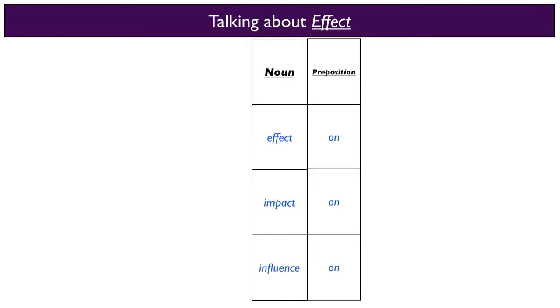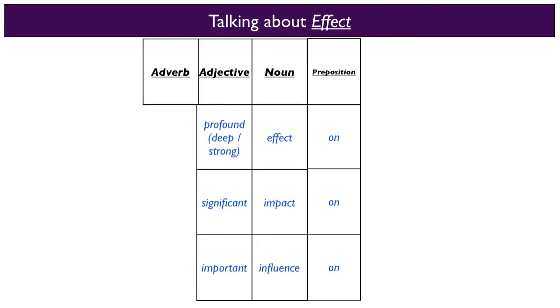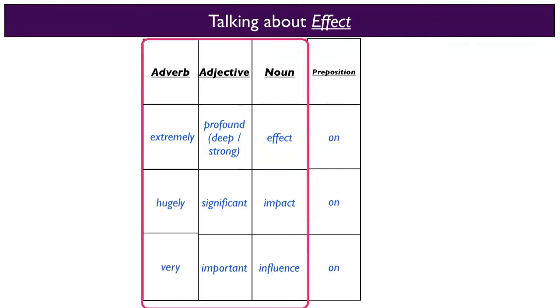Let's look now at how to talk about effect and to develop the sentences. So as we've seen, effect, impact and influence are nouns that always work with the preposition on. And adjectives are put beforehand like profound, significant or important. Then adverbs describe adjectives, so we have extremely, hugely and very. This adverb-adjective-noun combination is a very effective and rich way of describing something.